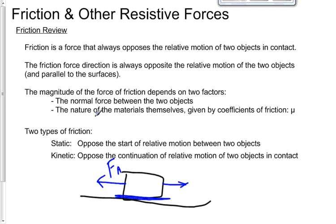The two types of friction are static and kinetic. Static opposes the start of relative motion - something sitting on an object won't move until you overcome static friction. Kinetic friction opposes the continuation of relative motion. Two things already in motion, it will try and stop that motion from continuing.